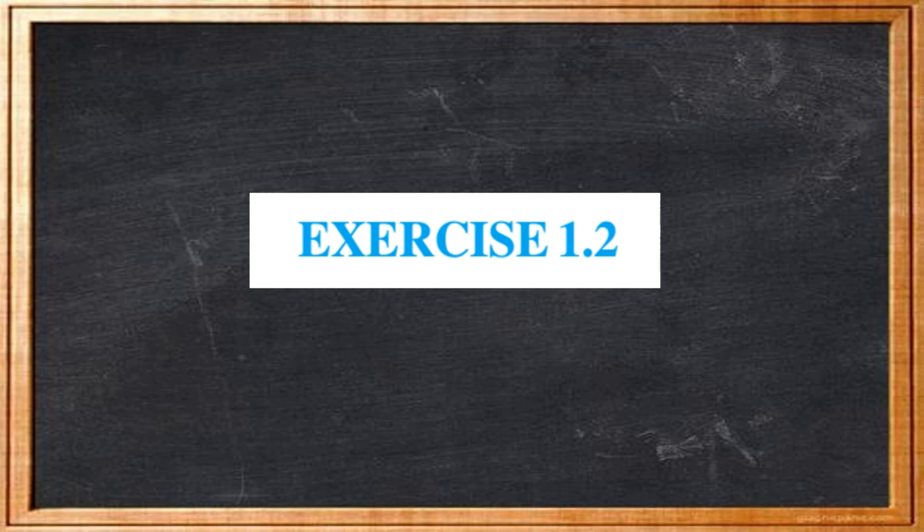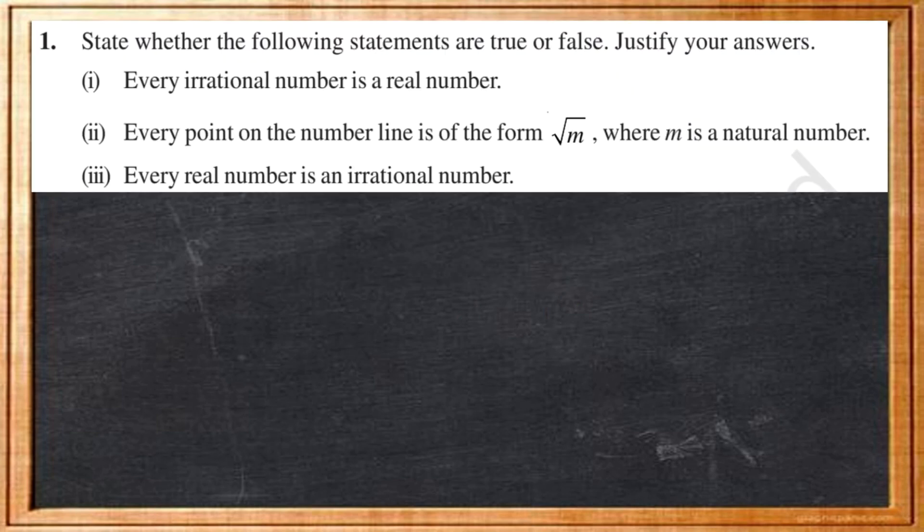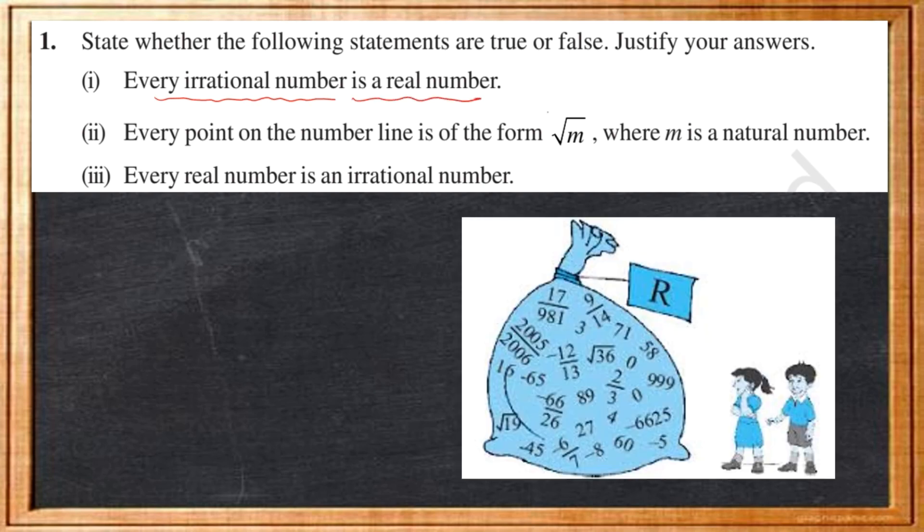Now, let us solve exercise 1.2. In this first question, we have to check whether the following statement is true or false. Statement 1 says, every irrational number is a real number. As we can see from this figure, the bag of real numbers, we have studied that collection of rational and irrational numbers makes real numbers. Therefore, the given statement is true.